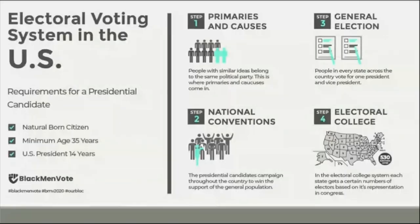Using a graphic from Black Men Vote, here is an explanation of the presidential election process. First, states hold primaries and caucuses, where several candidates from the same party run against each other for their party's nomination. Second, the parties hold national conventions where delegates from each state vote for their respective candidate. The candidate with the most votes receives the party nomination and moves on to the general election ballot. Third, the country holds the general election.